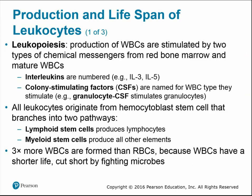Leukopoiesis is the production of white blood cells, stimulated by interleukins and colony-stimulating factors from the red bone marrow and mature white blood cells. All leukocytes originate from the hematopoietic stem cell, then branch into two pathways: lymphoid stem cells produce lymphocytes (T and B cells), while myeloid stem cells produce all other formed elements. The body typically produces three times as many white blood cells as red blood cells because white blood cells have a shorter lifespan — they die fighting infections and pathogens.